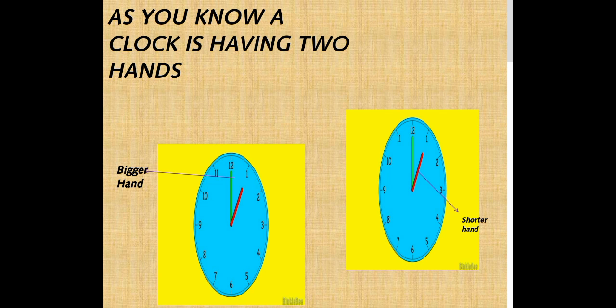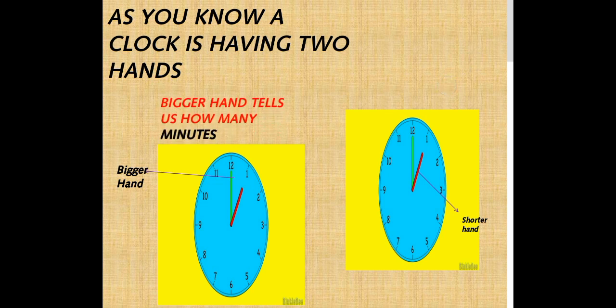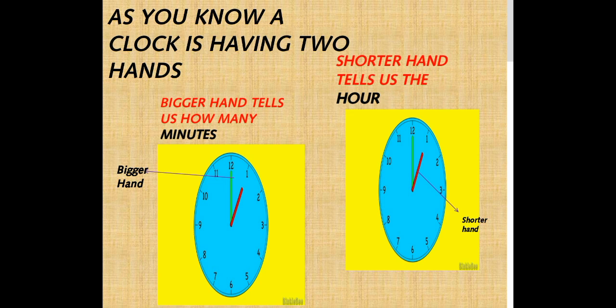As you know, a clock has two hands: a bigger hand and a shorter hand. The bigger hand tells us how many minutes there are, and the shorter hand tells us about the hour.